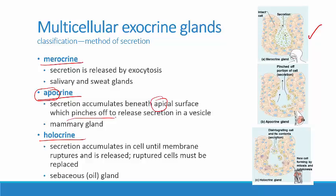In holocrine secretion — the bottom picture — the secretion accumulates in the cell, and then at some point the cell membrane ruptures. The secretion, along with other cell debris, is released into the duct region. In order to continue making secretions, the ruptured cells have to be replaced, because the whole cell bursts open — holocrine secretion. Hopefully that helps you remember the term.